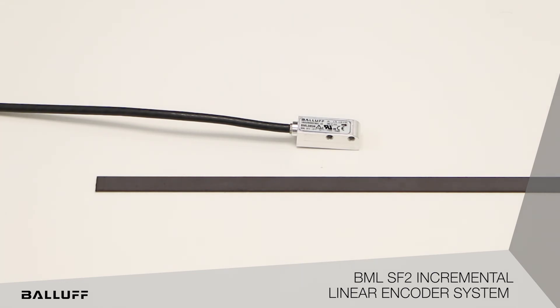The BML SF2 magnetic linear encoder system offers position resolution to 1 micrometer, system accuracy up to plus-minus 12 micrometers, working length up to 48 meters, integrated status LEDs on the sensor head to aid in the installation, setup, and fault identification.